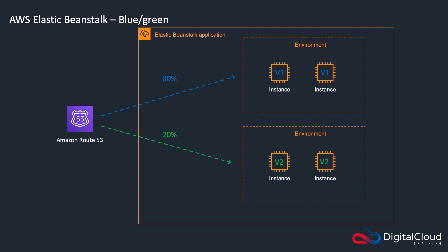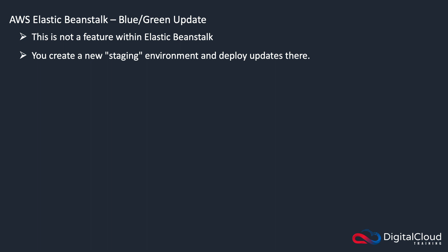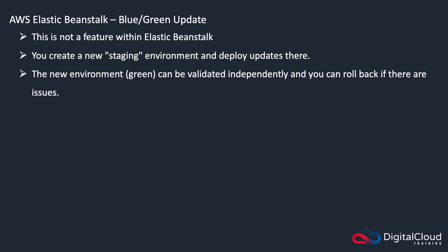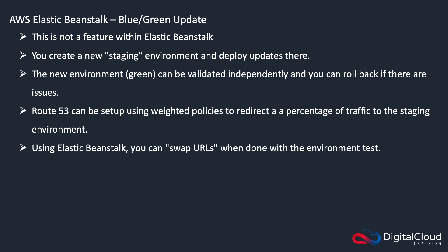We now have Elastic Beanstalk with the blue/green method. This isn't exactly an Elastic Beanstalk feature — what you're doing is launching a new environment. You have your existing environment on version one and a new environment launched with version two of the code. Then you use Route 53 weighted routing policies to direct a certain percentage of traffic to the new environment. Once you're happy that it's working, you cut over all the traffic to the new environment and remove the old one. You create the new staging environment, deploy your updates there, and the new environment can be validated — you can easily roll back if you have any issues. Route 53 weighted routing policies is one way to direct traffic, and then you can swap the URLs within Elastic Beanstalk when you're finished testing. Again, there's zero downtime because you have a whole new environment running with the new code.